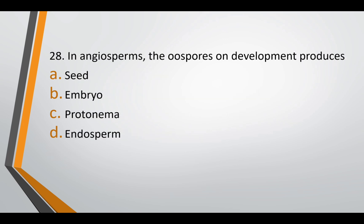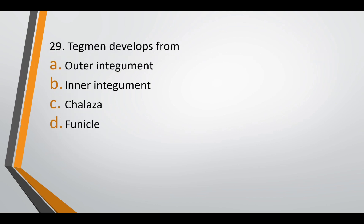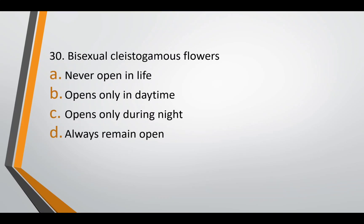Question twenty-eight: in angiosperms, the oospores on development produce — seed, embryo, protonema, or endosperm. The correct answer is option B — embryo. Question twenty-nine: tegmen develops from — outer integument, inner integument, chalaza, or funicle. The correct answer is option B — inner integument. Question thirty: bisexual cleistogamous flowers — never open in life, open only in daytime, open only during the night, or always remain open. The correct answer is option A — they never open in life.